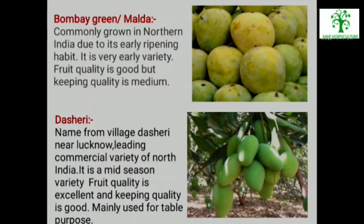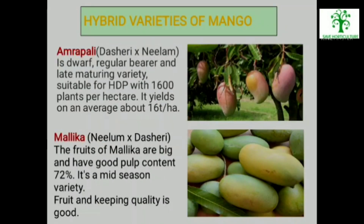Hybrid Varieties of Mango — Amrapali: In 1979, Amrapali, which is a cross of Dashehari and Neelam, was released by IARI New Delhi for commercial cultivation. It is a dwarf, regular bearer and late maturing variety. This variety is suitable for high density planting with 1600 plants per hectare. It yields on an average about 16 tons per hectare.